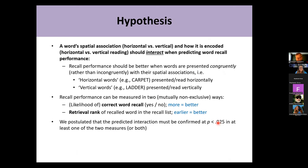After framing this research question, we came up with concrete hypotheses inspired by previous findings. We claim that a word's spatial association — whether horizontal or vertical — and how it's encoded, horizontally versus vertically, should interact when predicting word recall performance. More concretely, recall performance should be better when words are presented congruently rather than incongruently with their spatial associations.